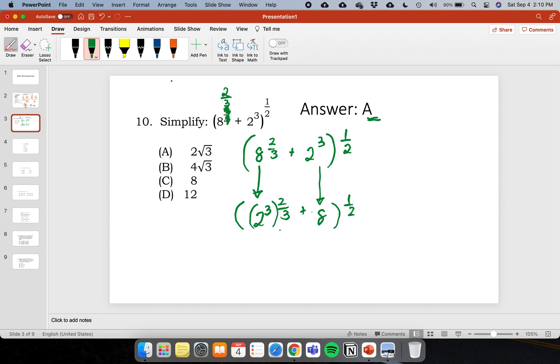So if you solve this, this would look like, this will cancel out. So this would be 2 raised to 2 plus 8 or 4 plus 8 raised to 1 half. This will result to 12 raised to 1 half.